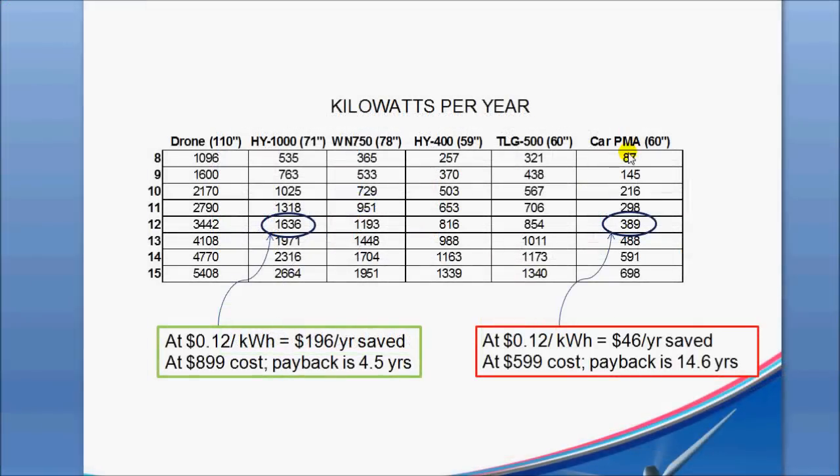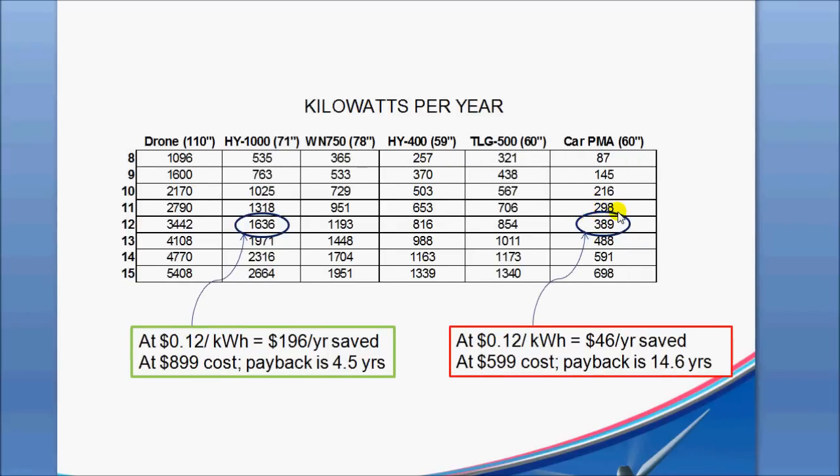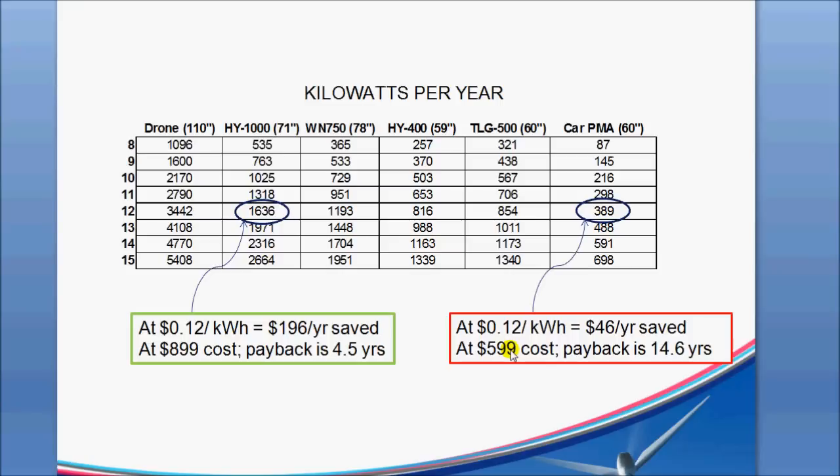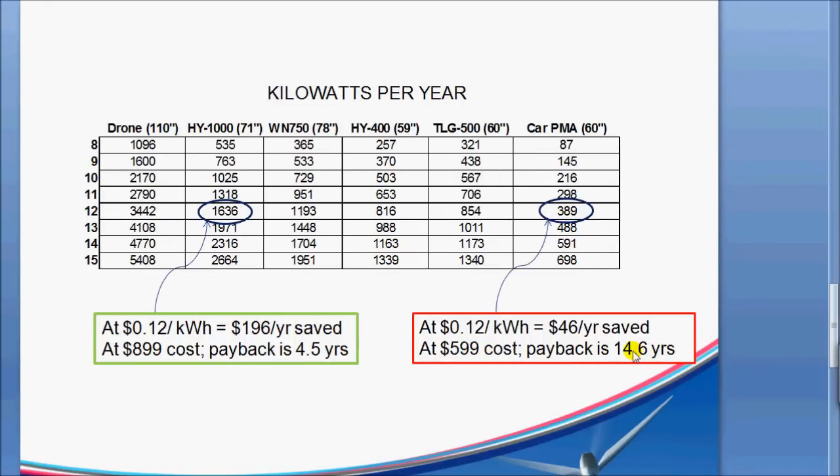So then if I look at the other end of the table here where we have the car PMAs, this could be a Windblue or a Thermodyne or even some of the cheaper brands out there, you'll be generating up to maybe about 389 kilowatt hours in a year. And at 12 cents per kilowatt hour, you'll save about $46. And if you pay on average about $599 for that turbine, it'll take you 14.6 years to pay that off, just the turbine part.